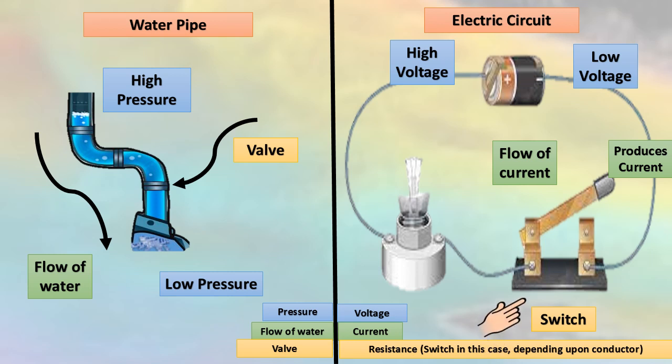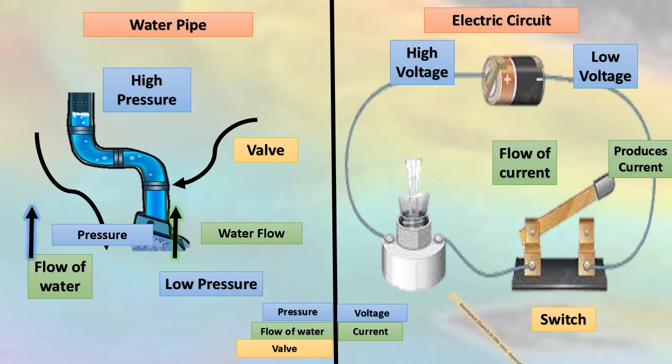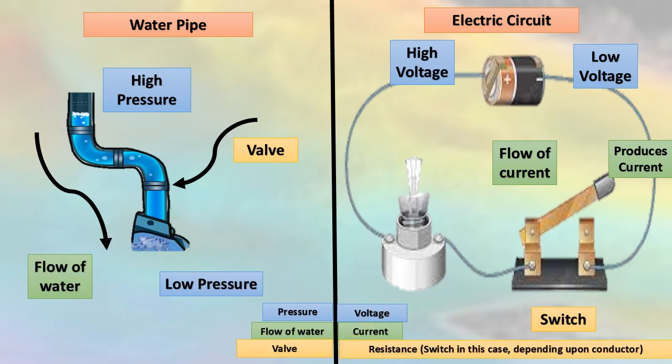It can also be controlled through the switch. Flow of water can be controlled through valve or the size of pipe. The more the voltage, the more will be the current. The more the pressure, the more the water flow. Wider pipes offer less resistance as compared to narrow pipes. In electrical circuit, resistance depends on the conductor material.